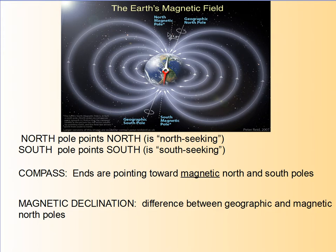So when you have a compass, the ends point towards magnetic north, not true north. Magnetic north and geographic north are offset by about 11.5 degrees. There are many fascinating studies behind what happens when this declination changes, and there are theories that this is one of the causes of the ice age. This difference between geographic north and magnetic north is called the magnetic declination.